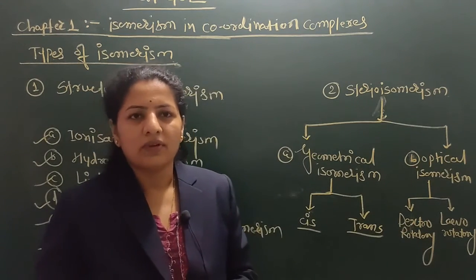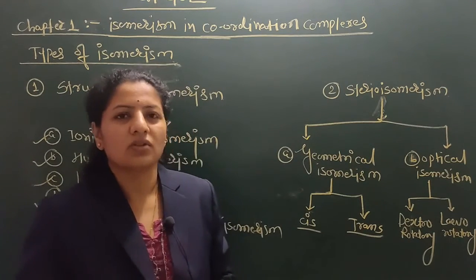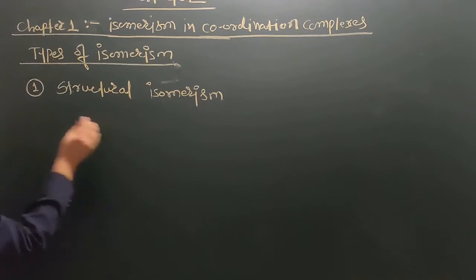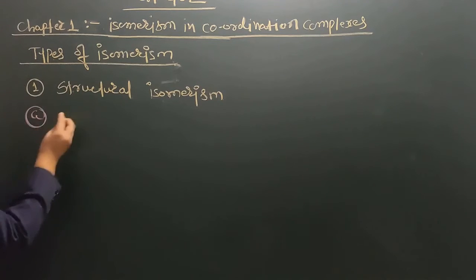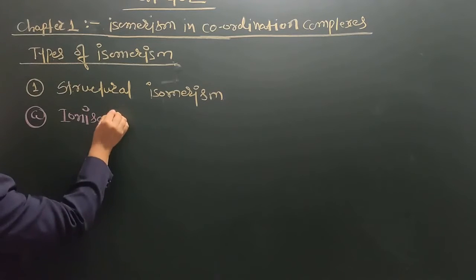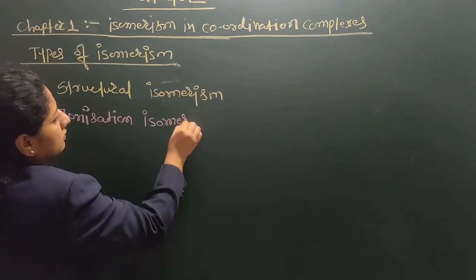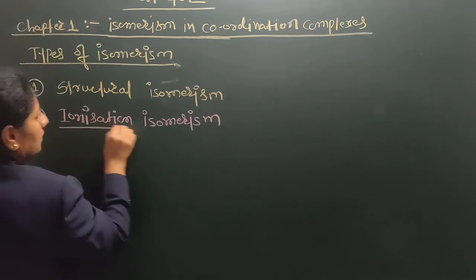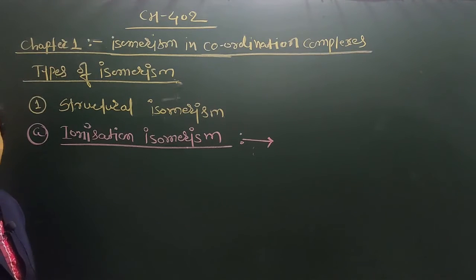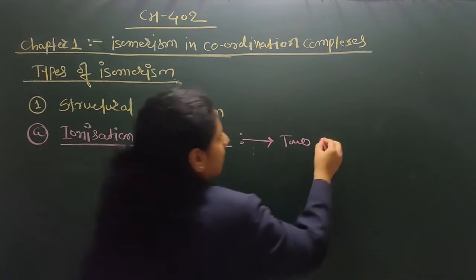First we are going to discuss the various types of structural isomerism, starting with ionization isomerism. So ionization isomerism means there are two coordination compounds differing in some way.